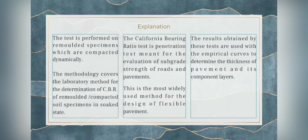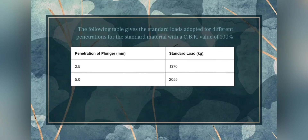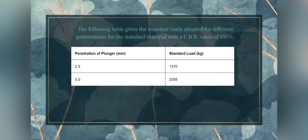The CBR penetration test is used for the evaluation of the structural strength of roads and pavements and is most widely used for the design of flexible pavements. Results obtained are used with empirical curves to determine the thickness of the pavement and its component layers. This table shows standard loads adopted for different penetrations for standard material with a CBR value of 100 percent. For a plunger penetration of 2.5 mm, the standard load is 1370 kg, while for a penetration of 5 mm, the standard load is 2055 kg.